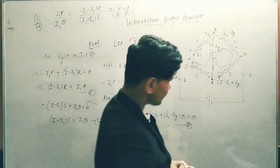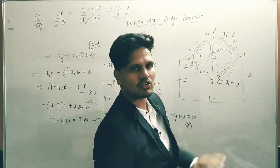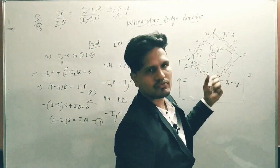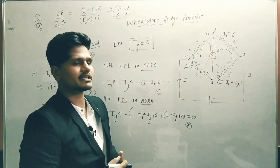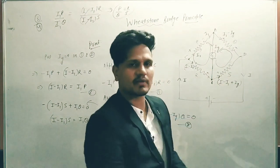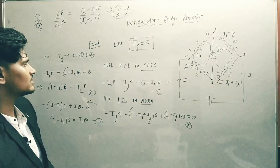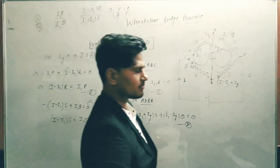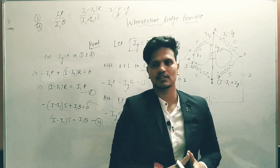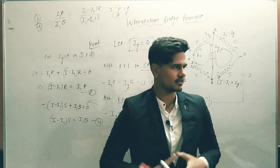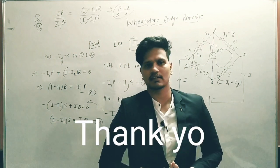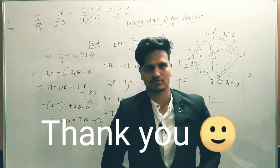This was the Wheatstone Bridge principle: if the current in the between branch is zero, then the ratio P/Q equals R/S, and conversely, if P/Q = R/S, the current in the mid branch will be zero. By using the Wheatstone Bridge, in the next lectures we will discuss the meter bridge and then the potentiometer. That's all for today — any doubts, please tell me in the comment section. Thank you.